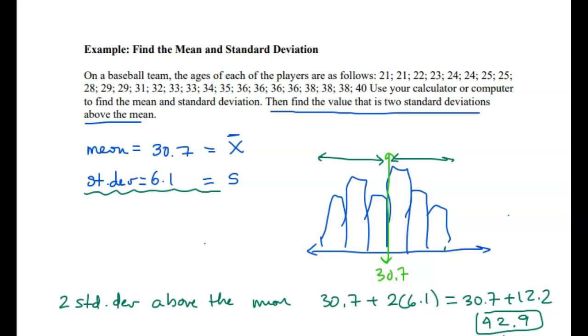All right, so we have 42.9 here. This data point is two standard deviations above the mean. We'll see as we do statistics that two standard deviations above the mean is a really significant data point because about 96% or over 96% of the data is contained within two standard deviations above and below the mean.